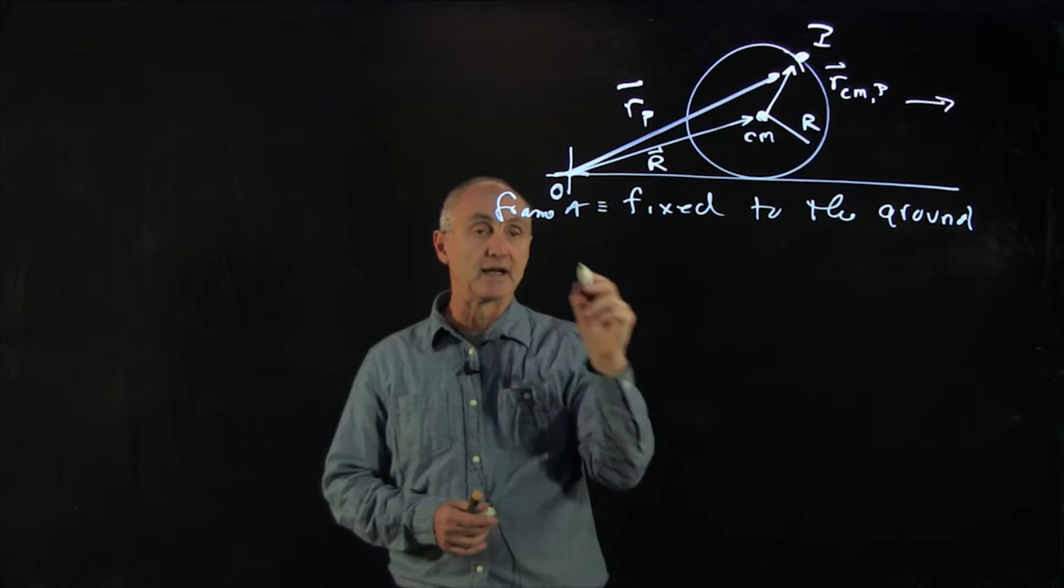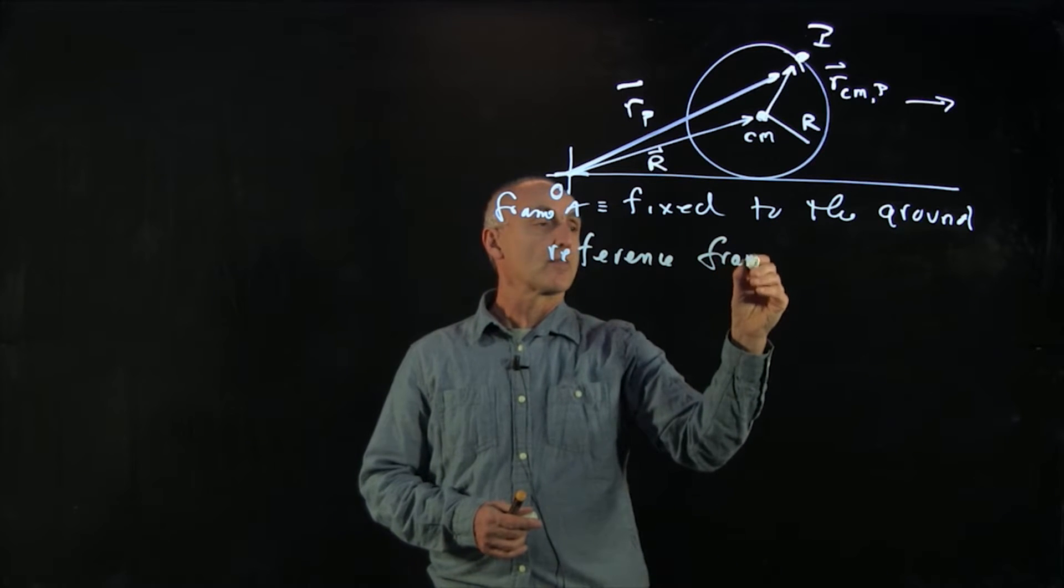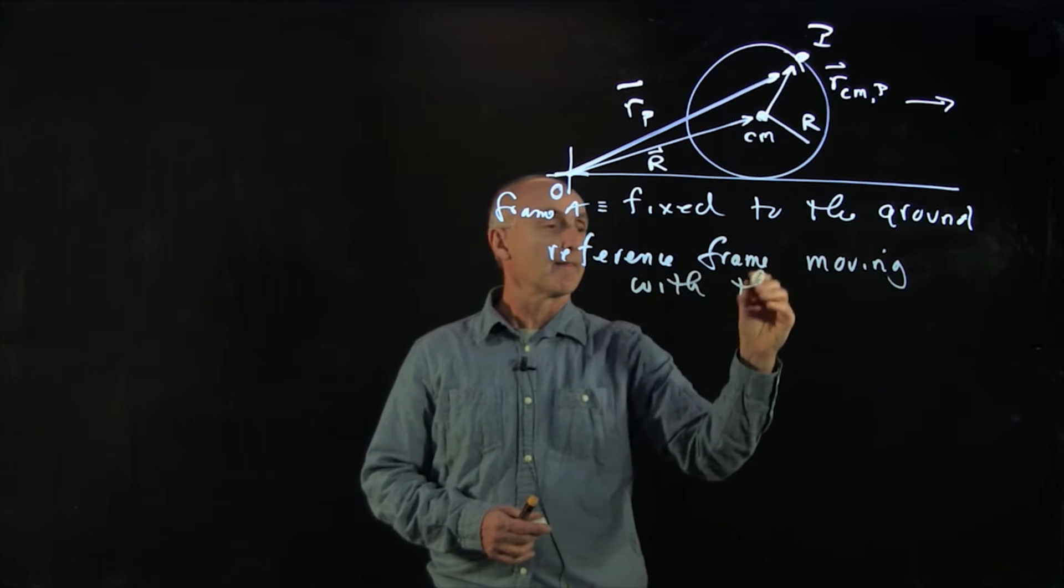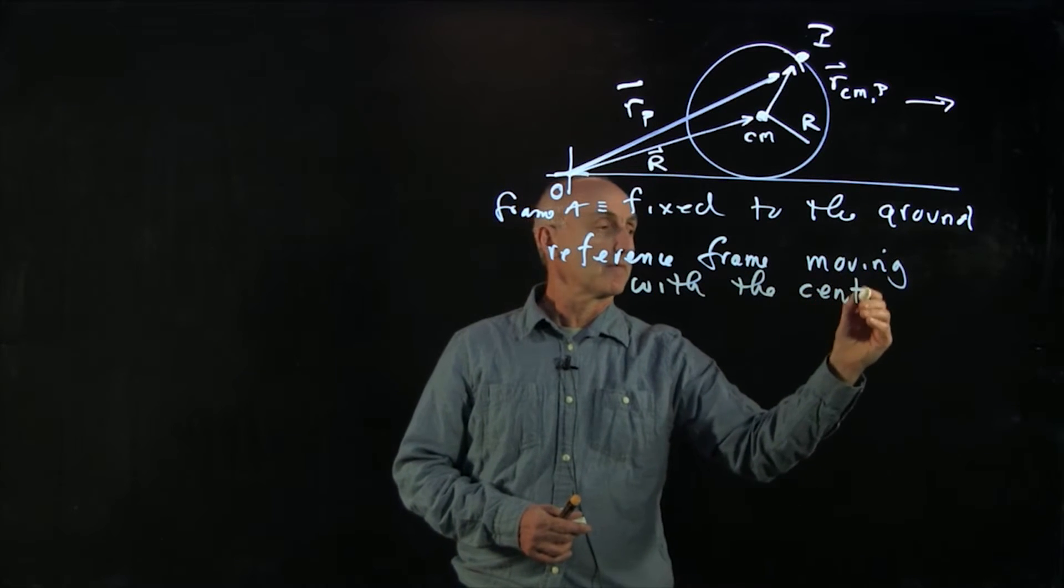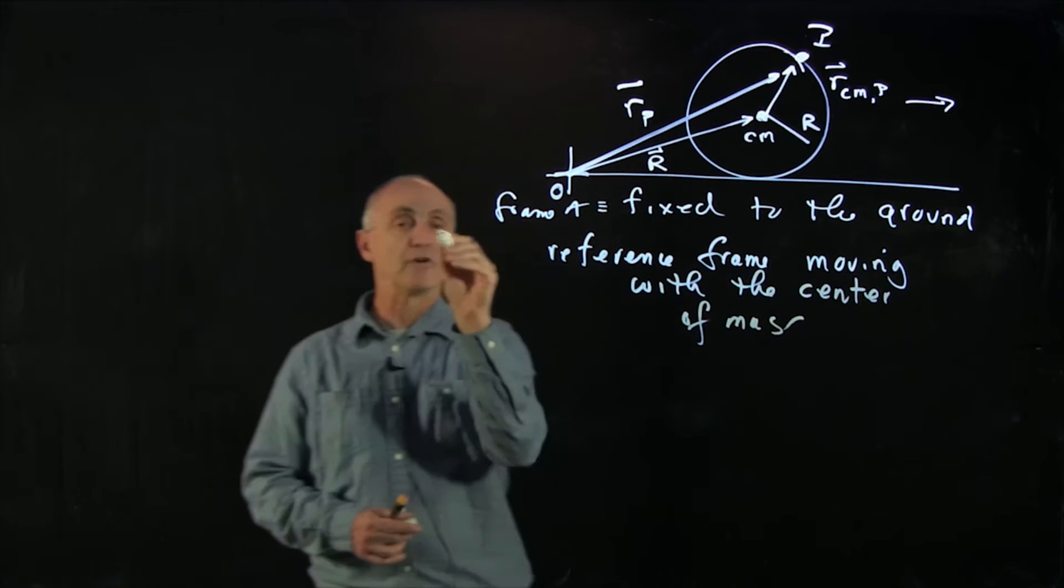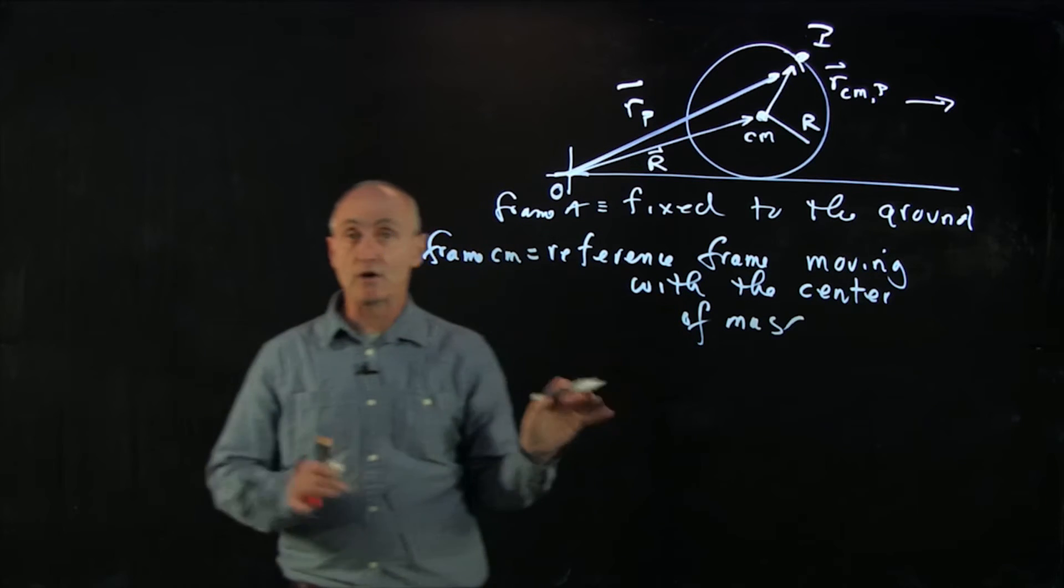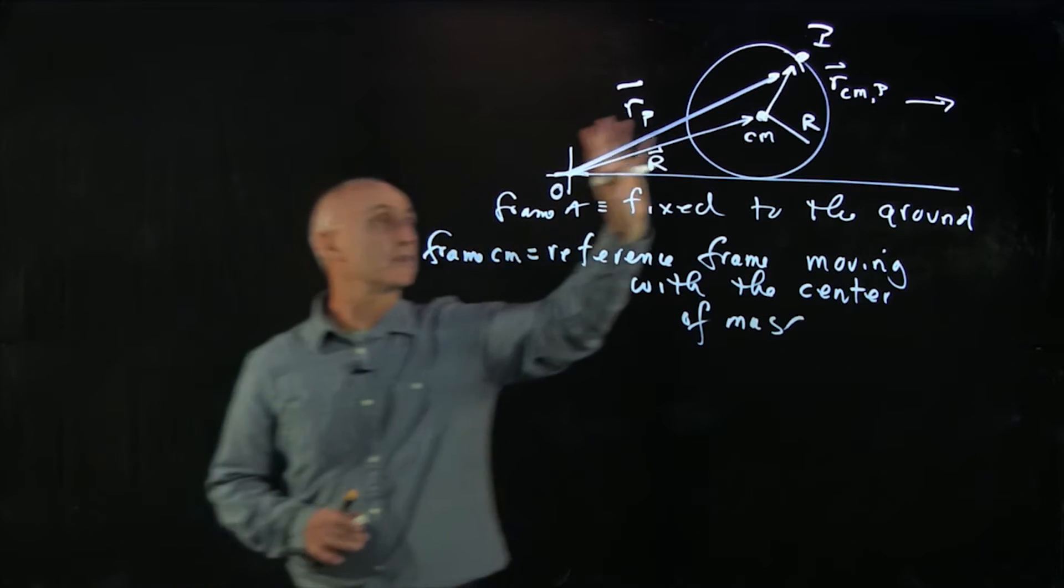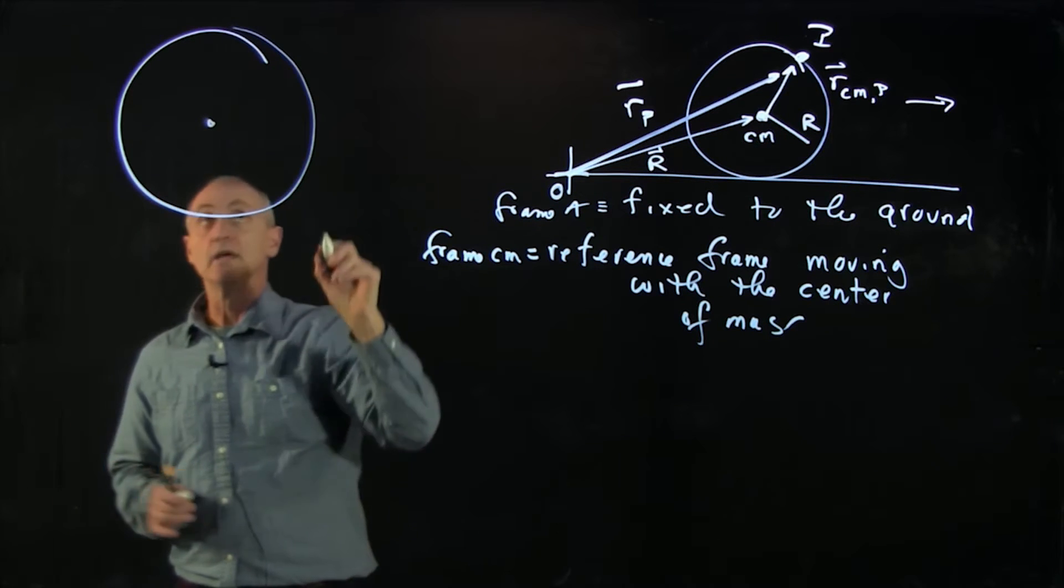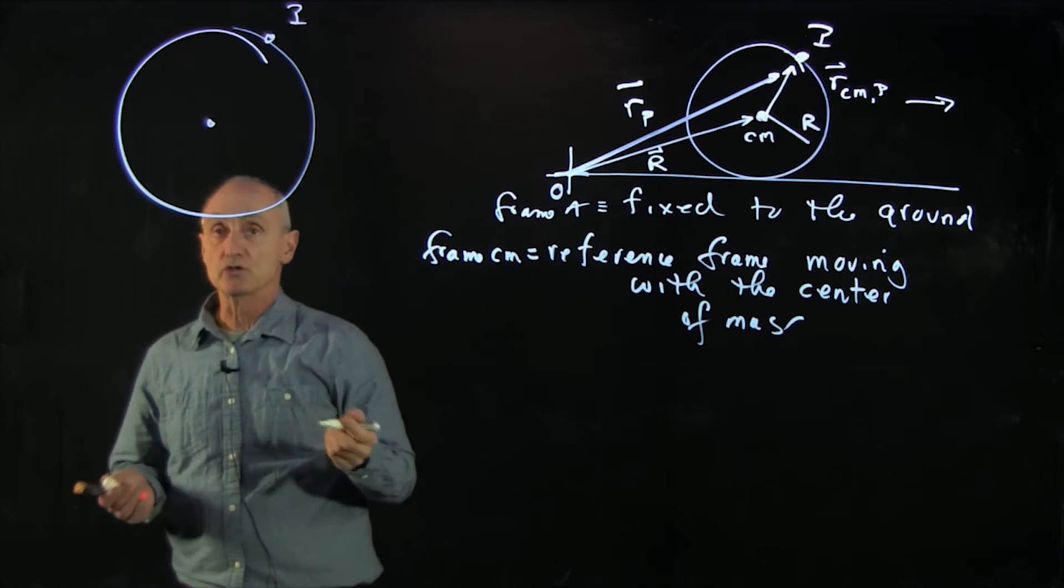Now what we'd like to look at is the reference frame moving with the center of mass. And we call that frame cm. Now the picture there is much easier, because in that reference frame, the center of mass is not moving. And the point P on the rim, the object is just undergoing circular motion.